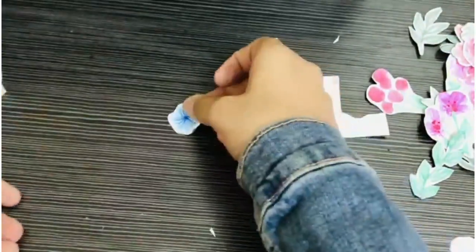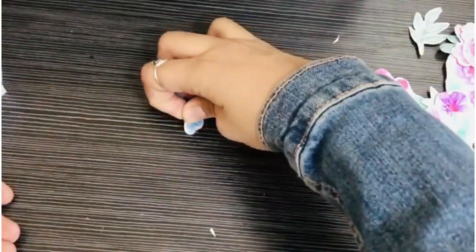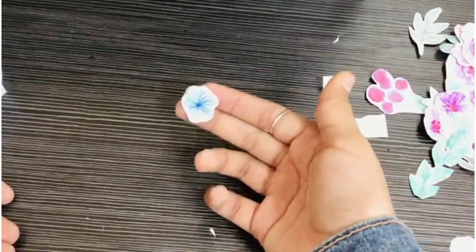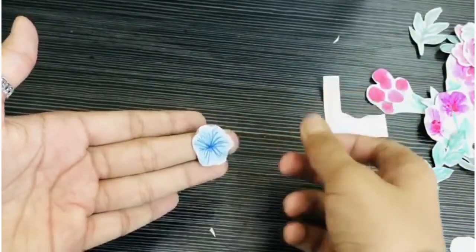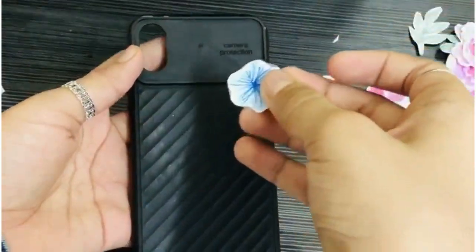Now, remove the double-sided tape, then you will get the sticker ready. You can stick your sticker on any surface.